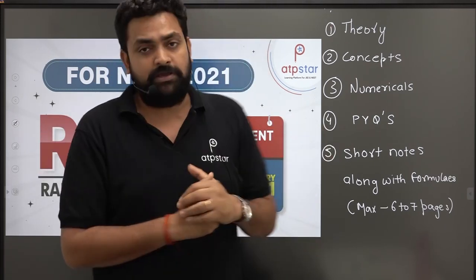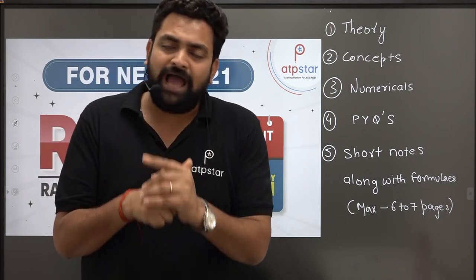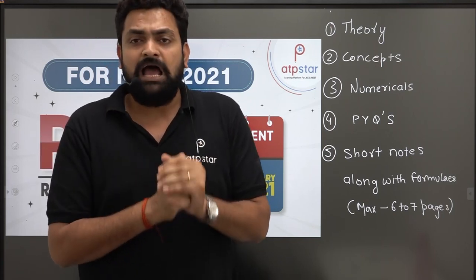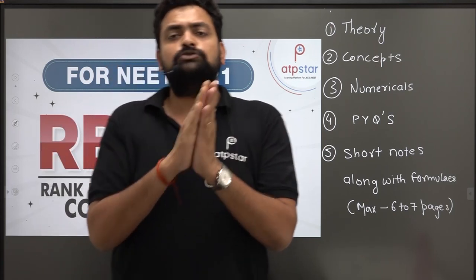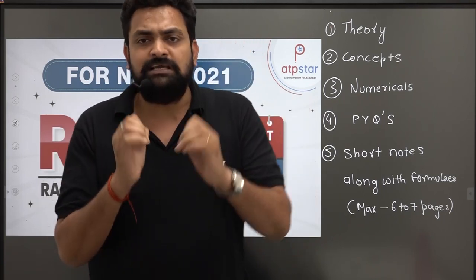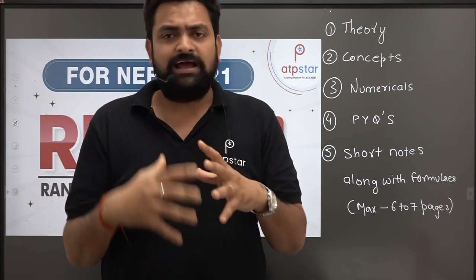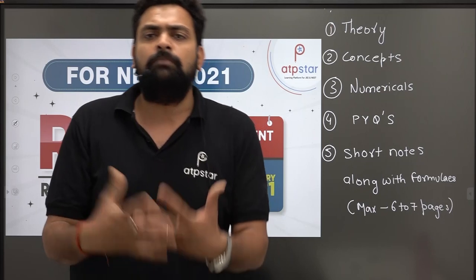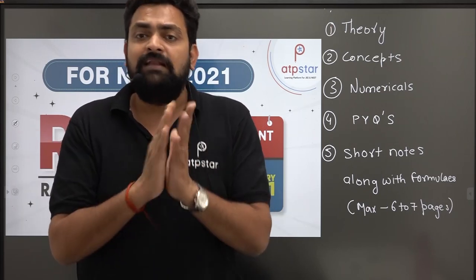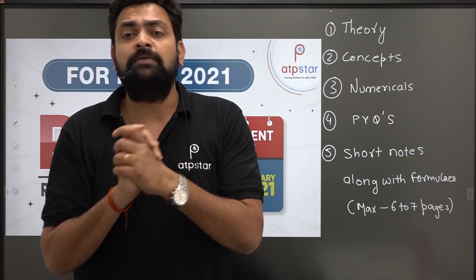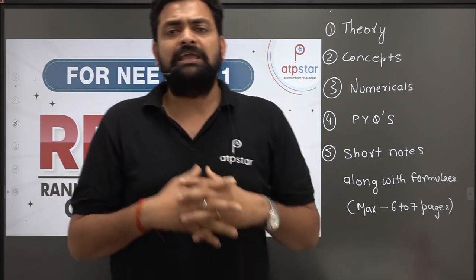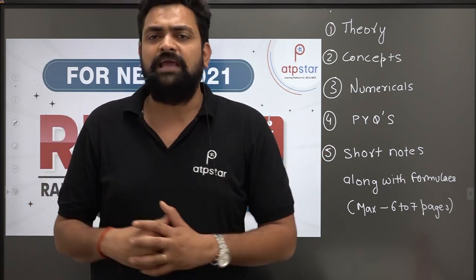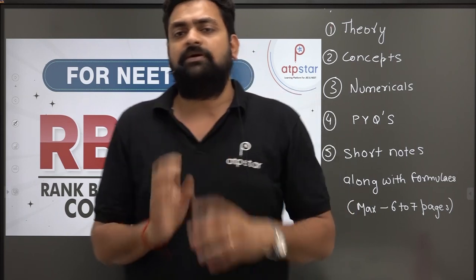अगर आपने पाँचों चीज़ follow की, तो I would definitely recommend you कि ये पाँचों चीज़ करने के बाद आप कोई भी एक किताब पकड़िए जो भी आपके teacher ने recommend की हो। उस किताब से सवाल लगाना start करिए — खूब सारे problems लगाओ, 20, 50, 100, 300 problems — लेकिन एक limit में। जैसे DPP करनी है, MPP करनी है, एक किताब करनी है — और जैसे ये तीनों चीज़ हो जाएँ, I will be done with the chapter, that's it।